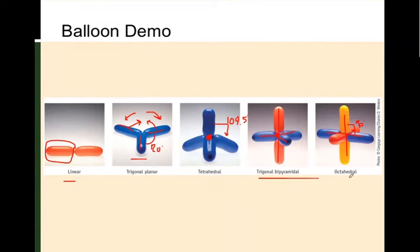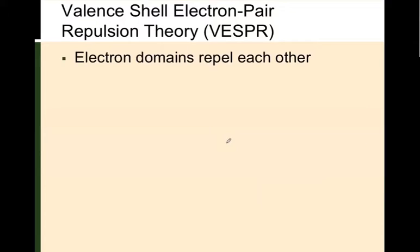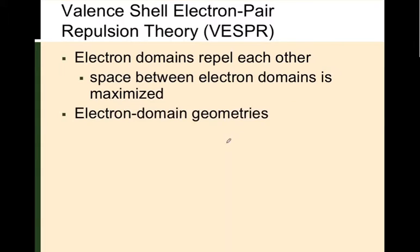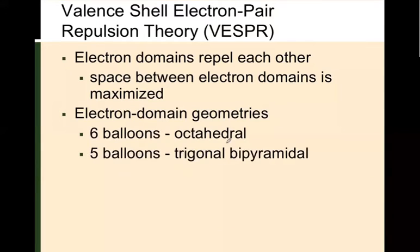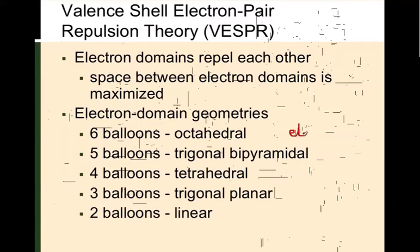VSEPR theory drives all of this: electron domains repel each other because electrons of the same spin don't like to be near each other. The space between electron domains is maximized, and they are equally spread around the central atom A. To summarize: six electron domains give octahedral, five give trigonal bipyramidal, four give tetrahedral, three give trigonal planar, and two give linear. Just replace balloons with electron domains and you get the same result.